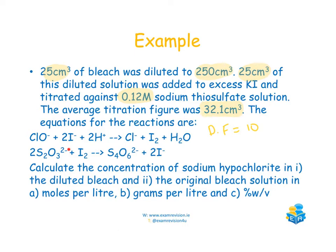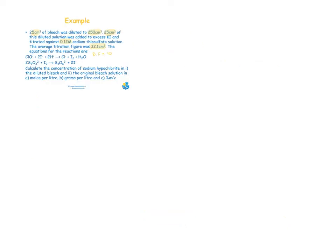The equations for the reactions are given, and you are asked to calculate the concentration of sodium hypochlorite in both the diluted bleach and the original bleach in moles per litre, grams per litre, and percentage weight per volume. The easiest approach is to do the diluted bleach calculations first and then the original bleach calculations.